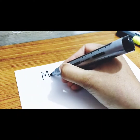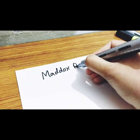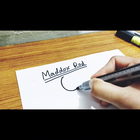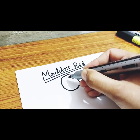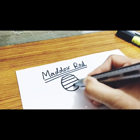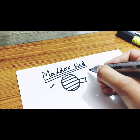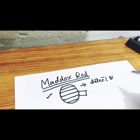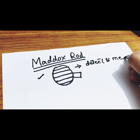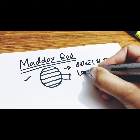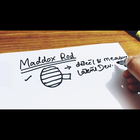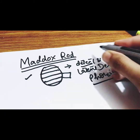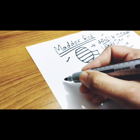Hello everyone, today I will explain the Maddox rod — what is the Maddox rod test. The Maddox rod is a handheld instrument with parallel plano-convex cylinder lenses. This instrument is used to detect and measure latent deviation or phoria. Phoria is a hidden deviation which can be detected and measured by use of the Maddox rod.